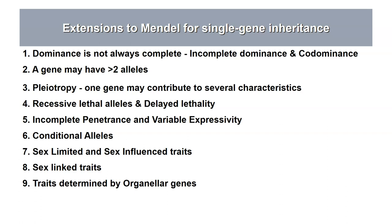There are different versions of dominance — incomplete and co-dominance — and we'll talk about those. Another thing Mendel didn't see was genes with more than two alleles; he always saw only two alleles. He didn't observe pleiotropy, which is when a gene can contribute to more than one trait. He didn't observe genes with recessive lethal alleles or delayed lethality. He didn't observe incomplete penetrance and variable expressivity — those terms refer to variation in expression of the phenotype for a given genotype.